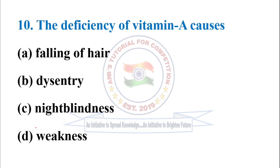Question number 10: the deficiency of vitamin A causes — among the four options, option C, that is night blindness, is due to deficiency of vitamin A. Other problems due to deficiency of vitamin A are delayed growth, throat and chest infections, poor wound healing, dry skin, and dry eyes.